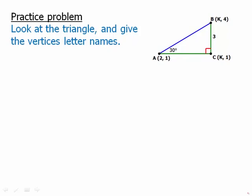So the point at (2, 1), we're going to call that A. The point at (k, 4), we're going to call B. And the point at (k, 1), we're going to call C.